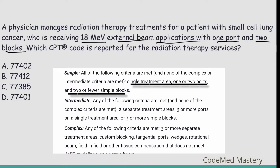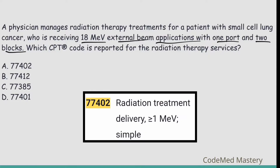One port and two blocks meets the simple criteria — single treatment area, one or two ports, two or fewer simple blocks. So we use 77402, radiation treatment delivery, greater than or equal to 1 MeV. The question also mentions 18 MeV, which is correct. Eliminate option B (complex), option C (intensity modulated), and option D (superficial ortho voltage). The right answer is option A, 77402.